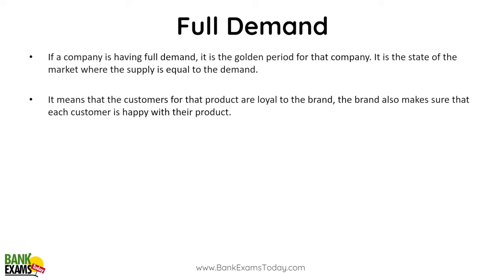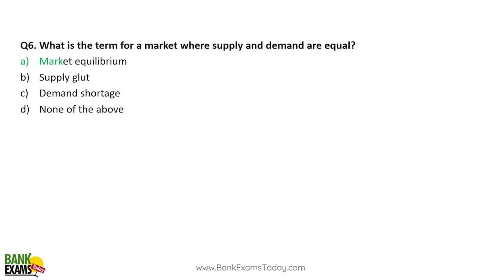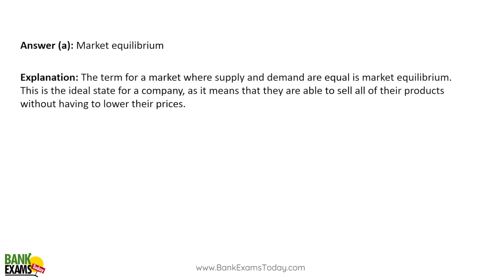Full demand. If a company has full demand, it is a golden period — aggregate demand equals aggregate supply, it's at equilibrium. A good example: at Vardhman, the demand for thread was exactly matched by what they were producing. That was a magic number. The term for a market where supply and demand are equal is market equilibrium.